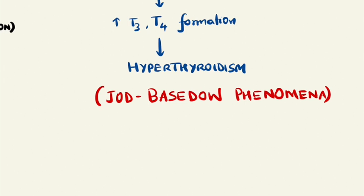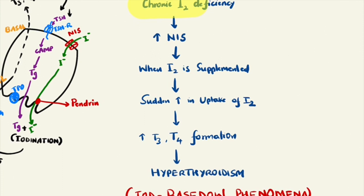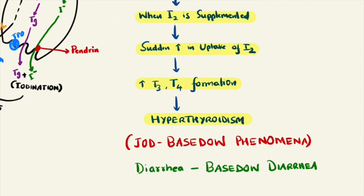Diarrhea is one of the important manifestations of Jod-Basedow Phenomenon, and the diarrhea which occurs here is called Basedow's diarrhea. To revise: when there is chronic iodine deficiency, there is increased sodium iodide symporter brought onto the basolateral surface of the follicular cell, waiting for iodine. When iodine is supplemented in this situation, there is a sudden increase in the uptake of iodine and a sudden increase in the formation of T3 and T4, resulting in hyperthyroidism. This is known as Jod-Basedow Phenomenon.